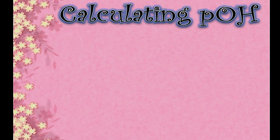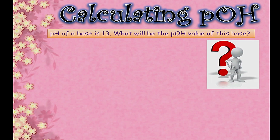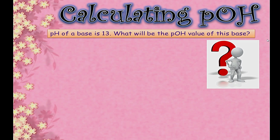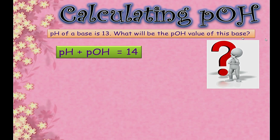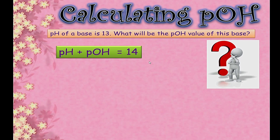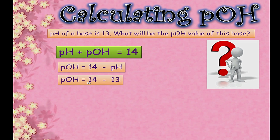Let's do another example using the second formula. The question is: the pH of a base is 13 — what will be the pOH value? Here, pH is given rather than concentration, so we use pH + pOH = 14. Therefore pOH = 14 − pH = 14 − 13 = 1.